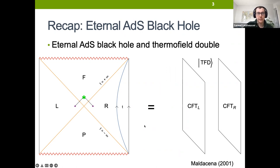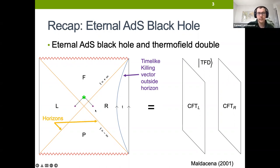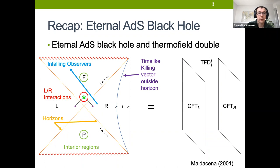From the perspective of the CFT, we have this notion of time along the boundary, and we have this timelike Killing vector outside the horizon that lets us naturally extend this asymptotic time into the bulk. But that time ends at the horizon, so if we do that procedure, we're not going to be able to probe the interior of the black hole or understand anything happening in the future or past interior regions.